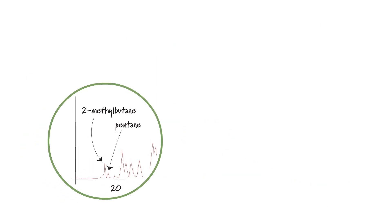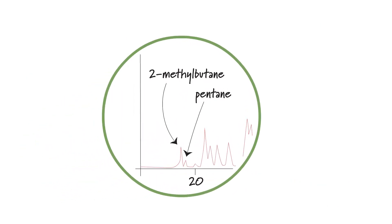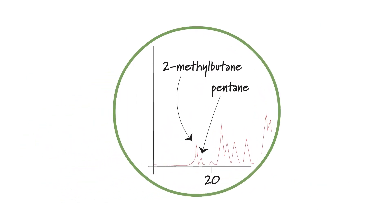We can see here in this chromatogram for petrol that if we have a pair of isomers for example 2-methylbutane and pentane the branched isomer has a slightly greater affinity for the mobile phase and so a shorter retention time. It flows through the column at a faster rate than the straight chain isomer.